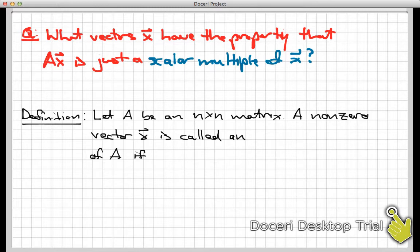Well, this is the subject of this section here. So we're going to start with an important definition of the main character in this screencast. So let's let A be an n by n matrix, any square matrix we wish. We can think of this as a matrix that implements a linear transformation from Rⁿ to Rⁿ if we wanted to. So a nonzero vector x is called an eigenvector.